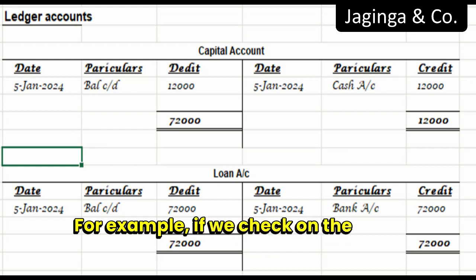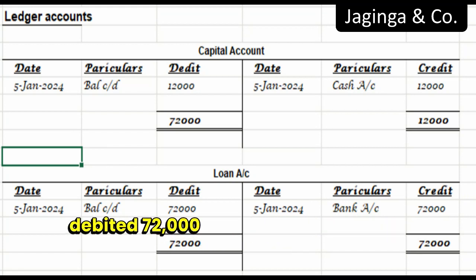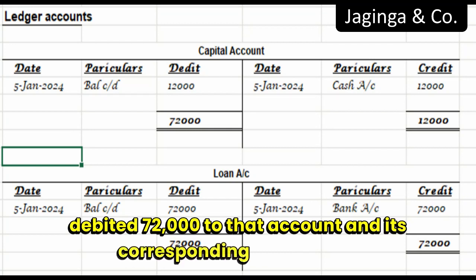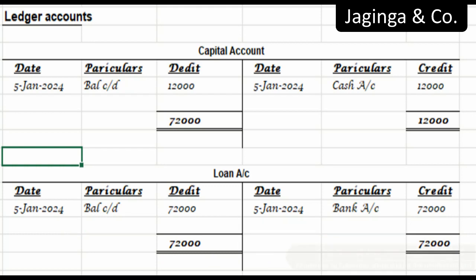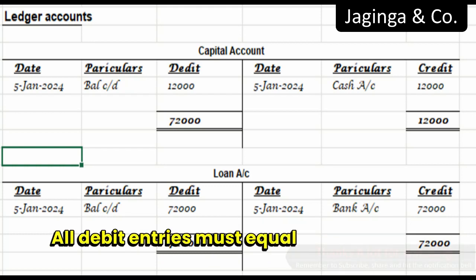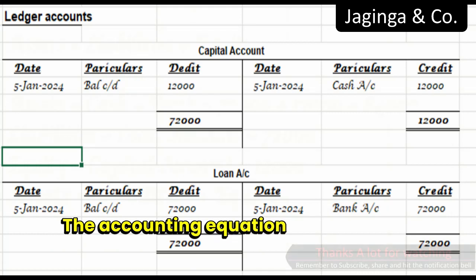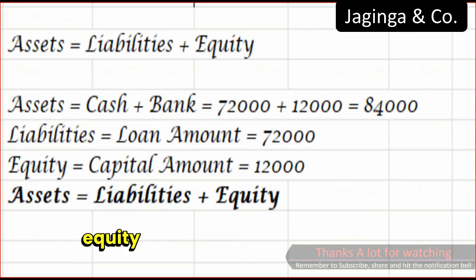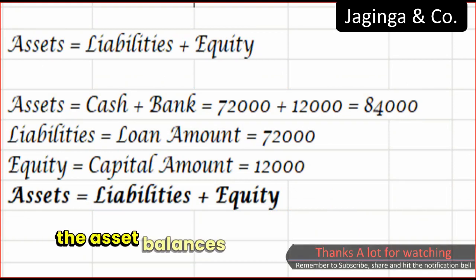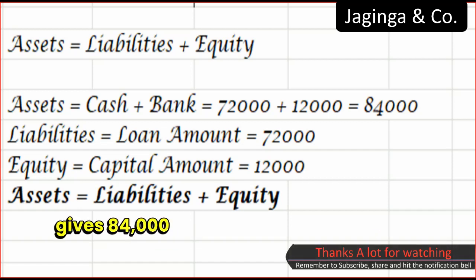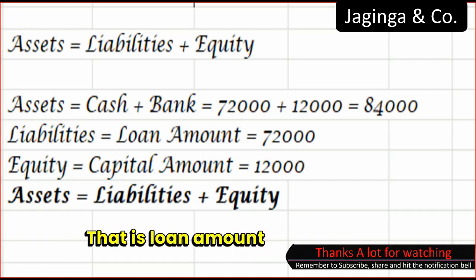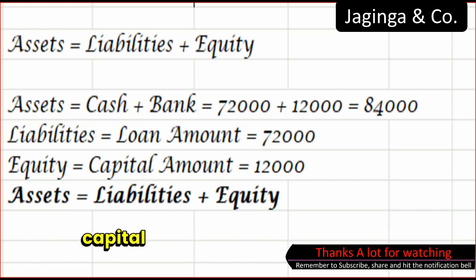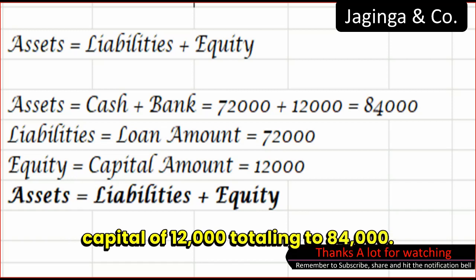For example, if we check the bank account, we debited $72,000 to that account and its corresponding credit entry was recorded on the loan account with $72,000. All debit entries must equal credit entries. The accounting equation — assets equals liabilities plus equity — has also been taken care of. This is verified when we add all the asset balances, cash and bank, which gives $84,000, which equals liabilities plus equity: that is, loan amount of $72,000 plus capital of $12,000, totaling $84,000.